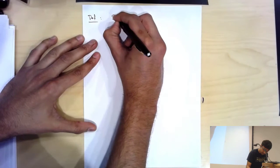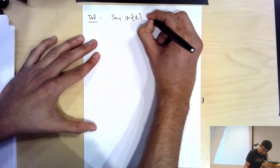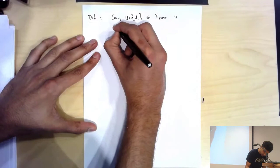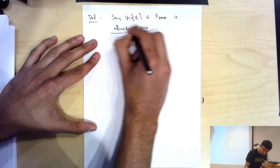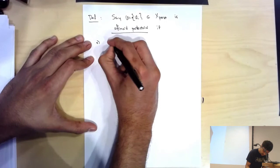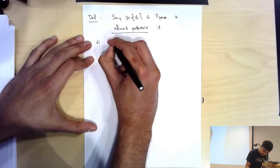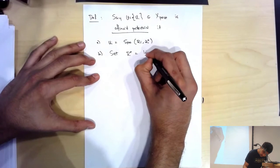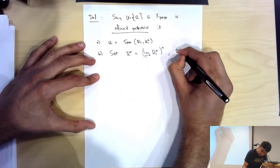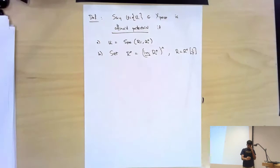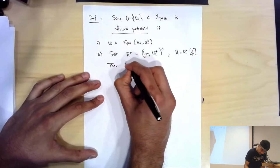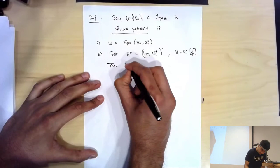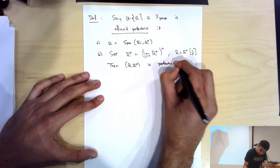If I have an object U = {U_i} in the pro-étale site of X, I'll call such an object affinoid perfectoid if it satisfies two properties. First, everything inside is affinoid: each U_i = Spa(R_i, R_i^+). Second, the limit is a perfectoid object. More precisely: set R^+ to be the direct limit of the R_i^+'s, then take a p-adic completion, and set R = R^+[1/p]. The axiom is that (R, R^+) is required to be perfectoid.